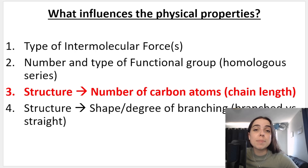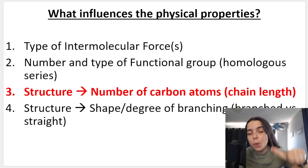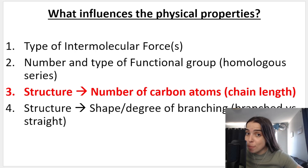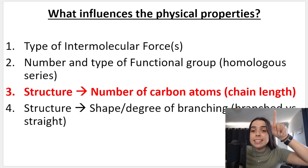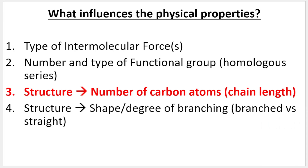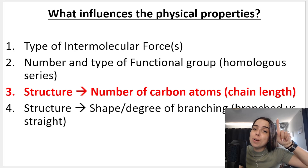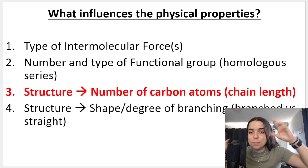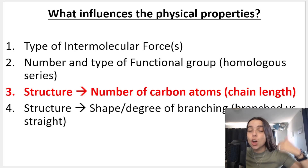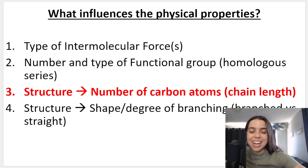In this playlist, we've been speaking about what influences the physical properties like boiling points, melting points, and vapor pressure of an organic compound. We said certain things affect or influence those physical properties, and in this lesson we'll be speaking about the number of carbon atoms in the main chain, or chain length.